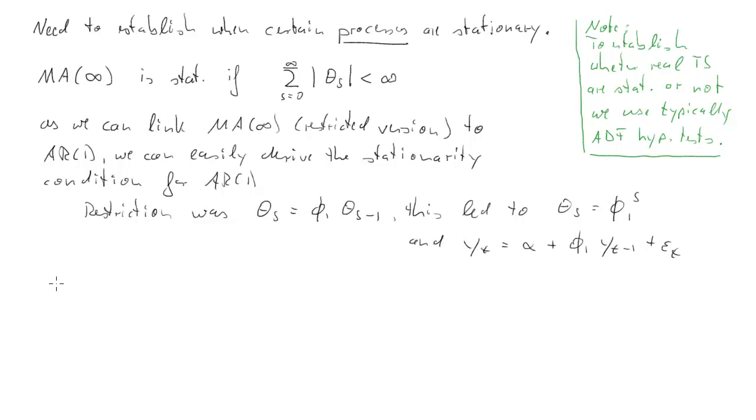So let's go back to the absolute summability condition of the MA(∞) process. We will establish that AR(1) is stationary if, and now we look at that absolute summability condition again, so if the sum from s equals 0 to infinity of the absolute value of φ₁ to the s is smaller than infinity, here φ₁ to the s because that was equal to θₛ, then we have a stationary process. Now that is the case if the absolute value of φ₁ is smaller than 1.